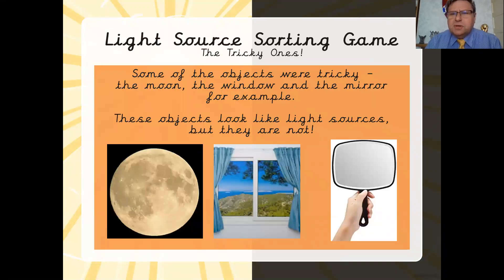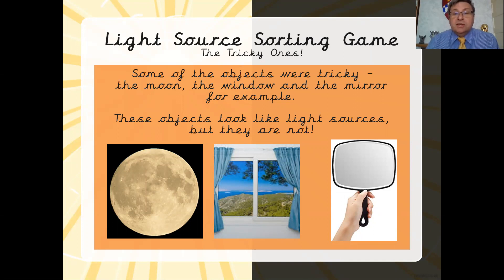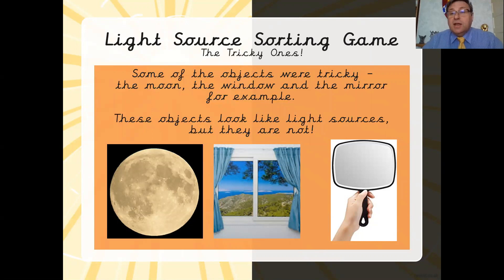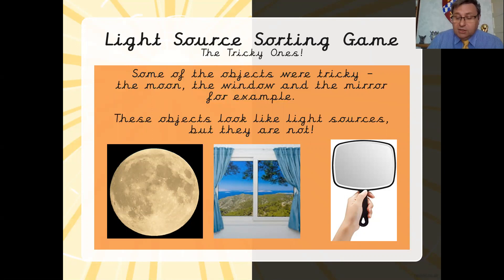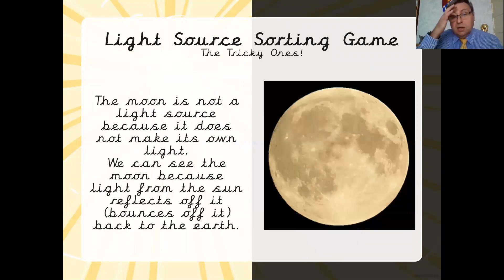Some of them were a bit tricky, so we're going to go through some of the really tricky ones. The moon, for example, a window, or a mirror. These objects look like light sources, but in fact they are not actually sources of light. They don't actually create any light themselves. So if you put these down, then obviously you didn't quite understand what we were looking for. They might look like they're sources, but they're not. They're actually reflectors.